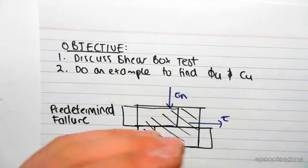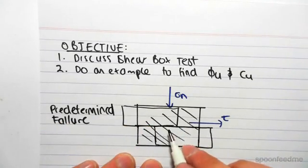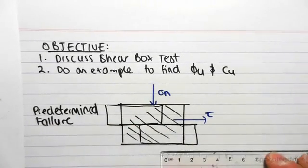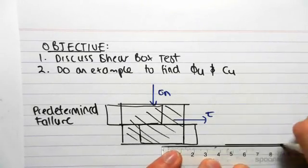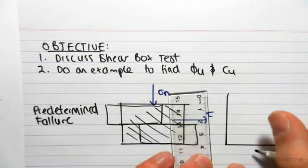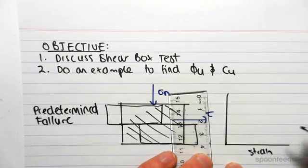As they slide past each other the soil will eventually fail and that'll tell us the normal and shear stress at which it fails. So if we were to draw a small graph showing this, we would have the strain against the...